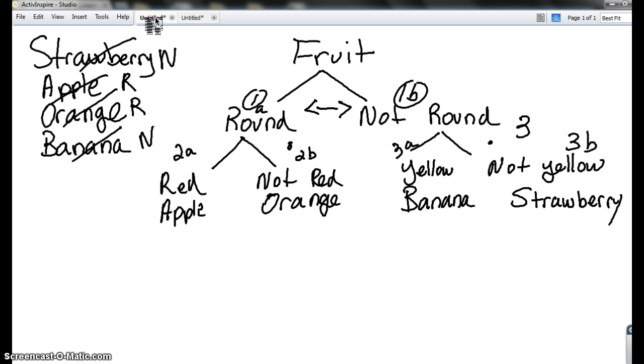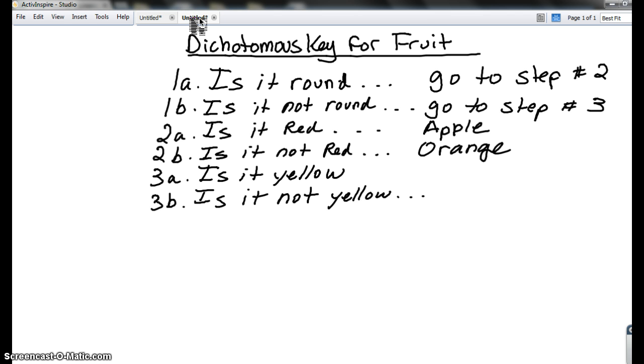Then, let's just check our flowchart one more time. Over here, for not round, did we have to go to any more steps? No. Alright. We were able to identify it. If it's yellow, what was it? A banana. And if it's not yellow, it was a strawberry. Alright. Beautiful. Here we go. Now we have our key is done.